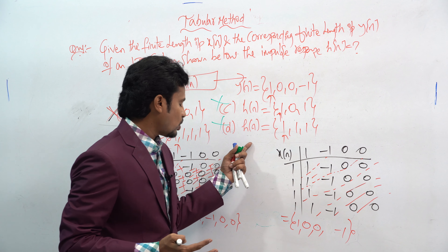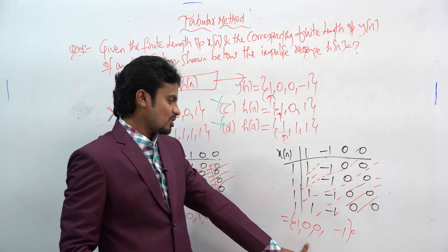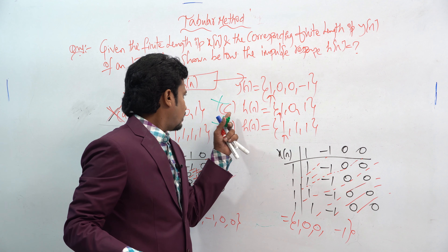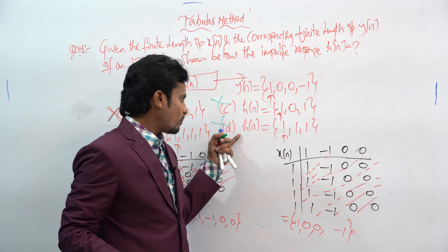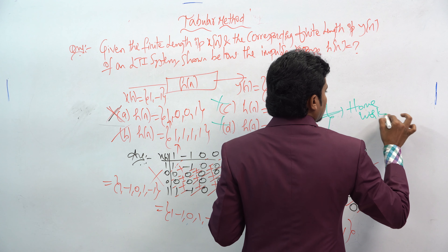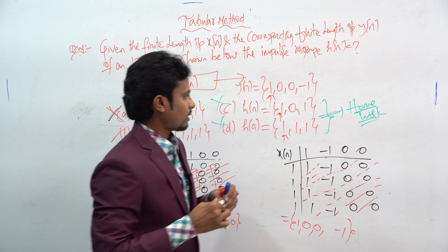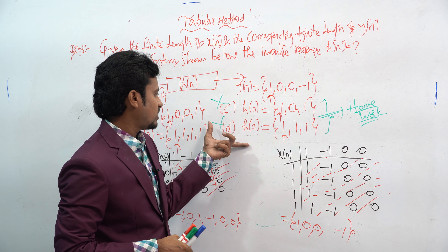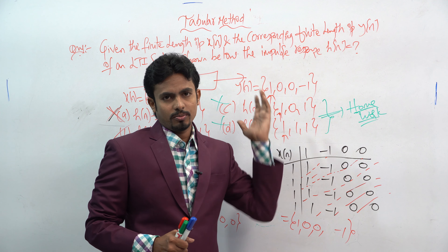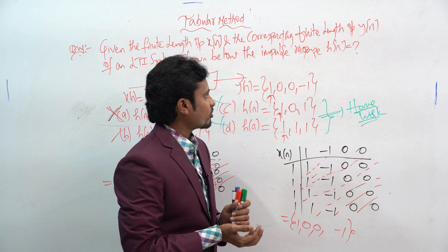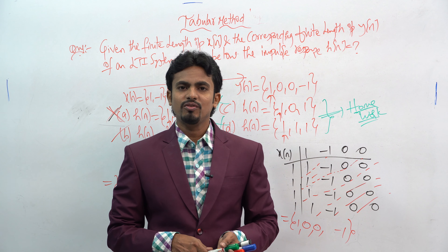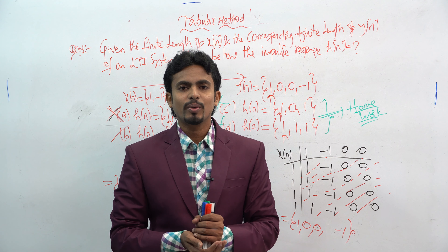Our answer is option B, giving y[n] = {1, 0, 0, -1}. If you're interested, verifying options C and D is your homework — solving those will give you a lot of confidence with the tabular method. In this way we can solve a number of questions based on the tabular method in convolution. If you really liked this video, please like, share, and subscribe to my YouTube channel. Thank you.